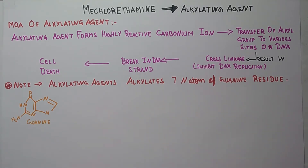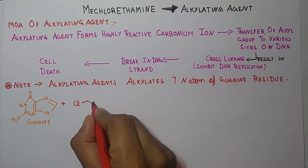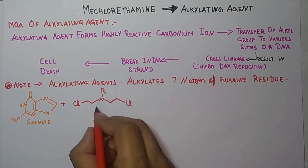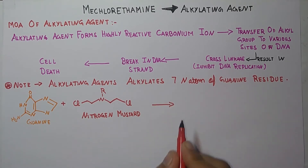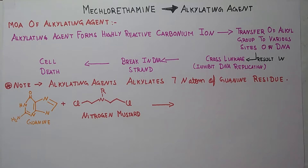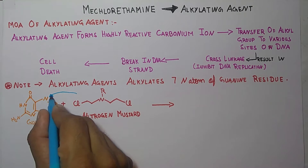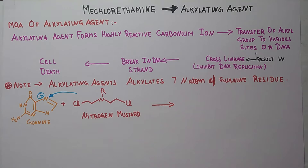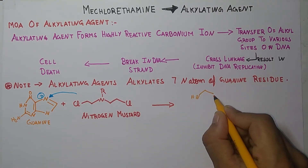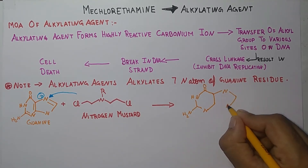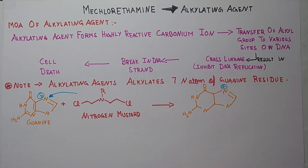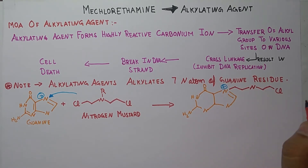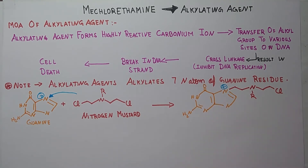We are taking the example of an alkylating agent. It is a nitrogen mustard type of alkylating agent. The alkylating agent attacks on the seventh position of the guanine atom — this is the seventh position. The product formed is a plus ion, and the name of this product is monoalkylated adduct.